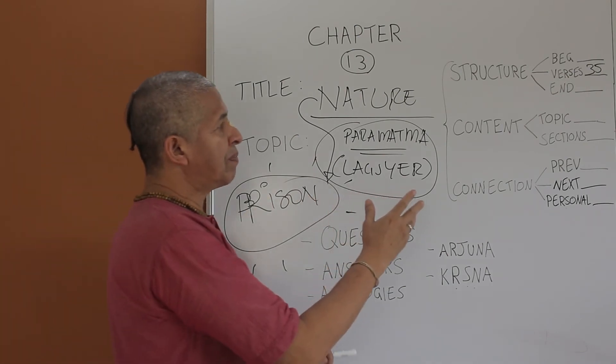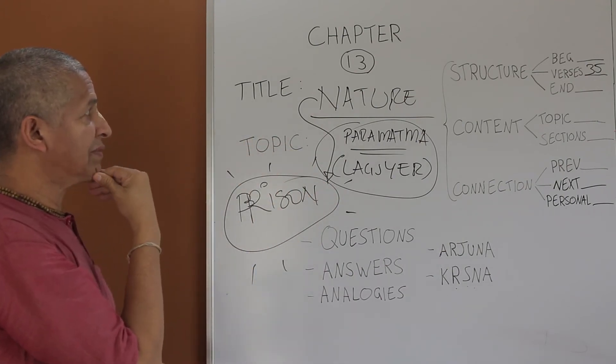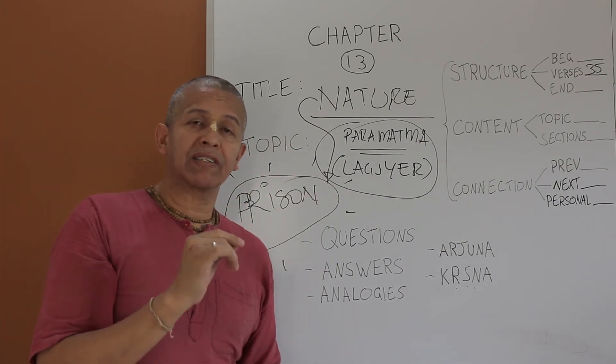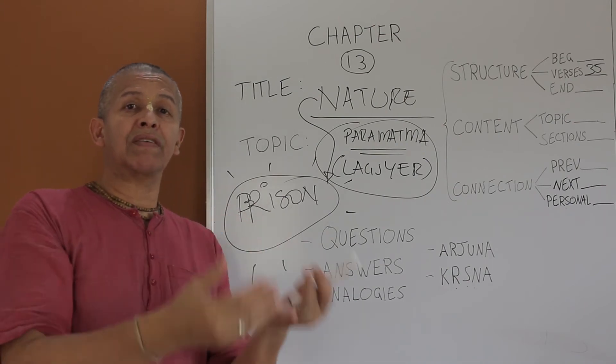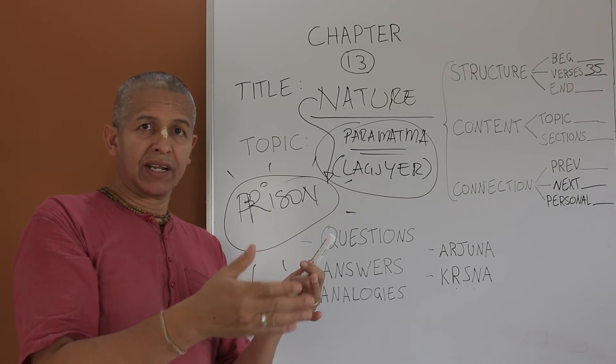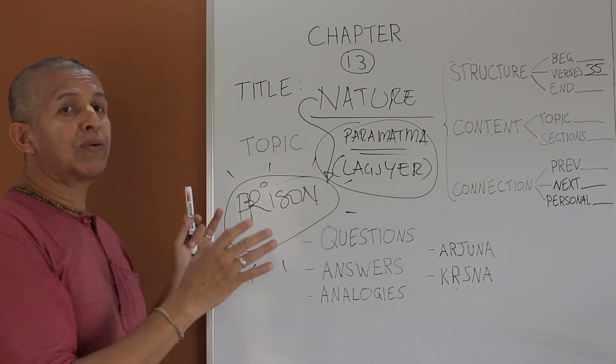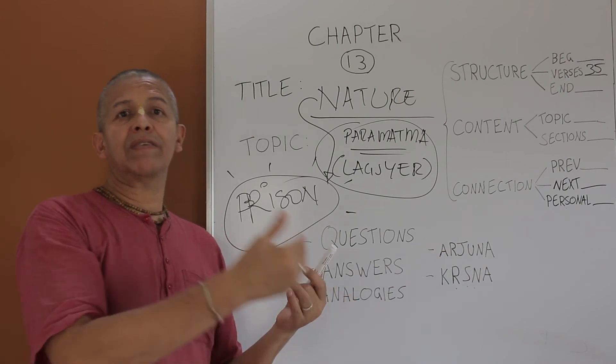What's the connection with the previous chapter, chapter 12? In chapter 12, text 7, Krishna says, I am the swift deliverer. He uses that word, Tesham Samudhartha, in Sanskrit. So here in this chapter, Krishna will explain how is that he delivers his devotee.